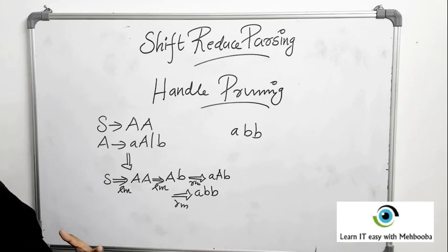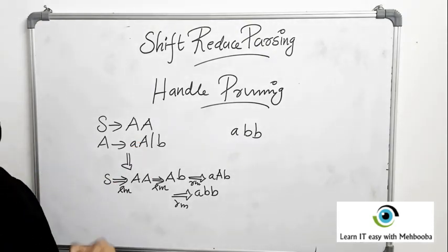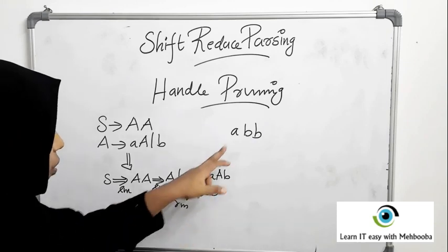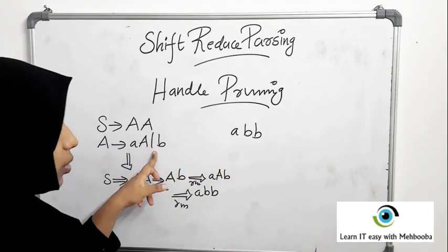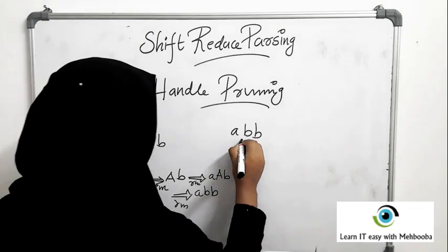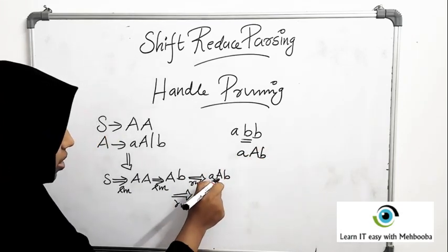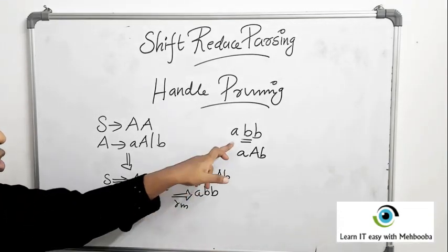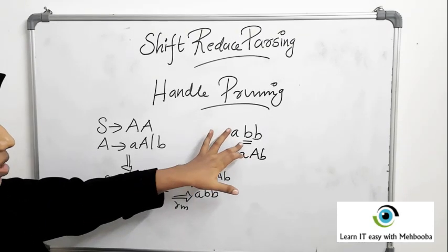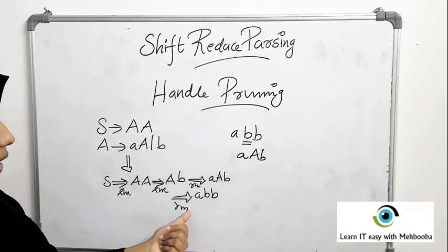So a handle is the leftmost substring that matches with the right-hand side of a production, and when you replace that string with its left-hand side, you get one step ahead in the rightmost derivation in reverse. For example, in a b b, 'a' is not the right-hand side of any grammar rule, so it is not a handle. 'a b' is not the right-hand side of any production, so it is not a handle. But b is the right-hand side of a production, so b is a handle.